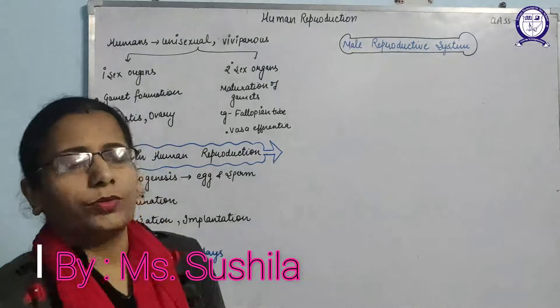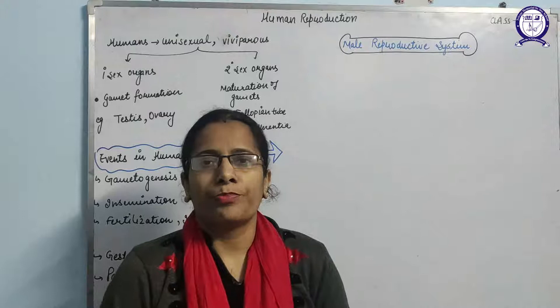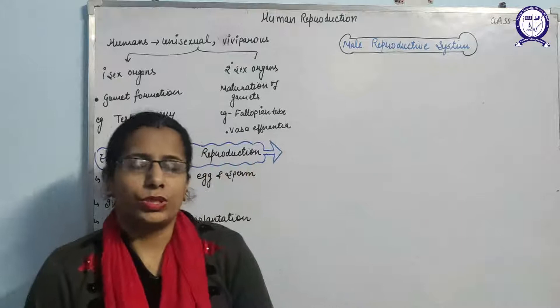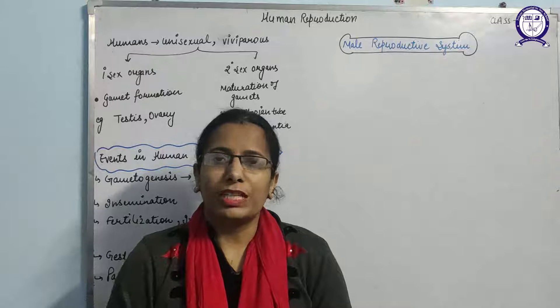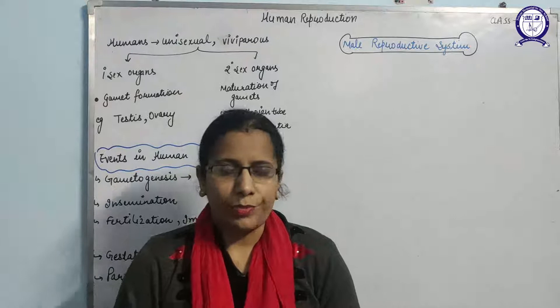Hello students, now we are going to start the next chapter of 12th class biology: human reproduction. As you know, humans are unisexual organisms — unisexual means males and females are separate. Second, humans are viviparous, meaning human beings give birth to live young ones.